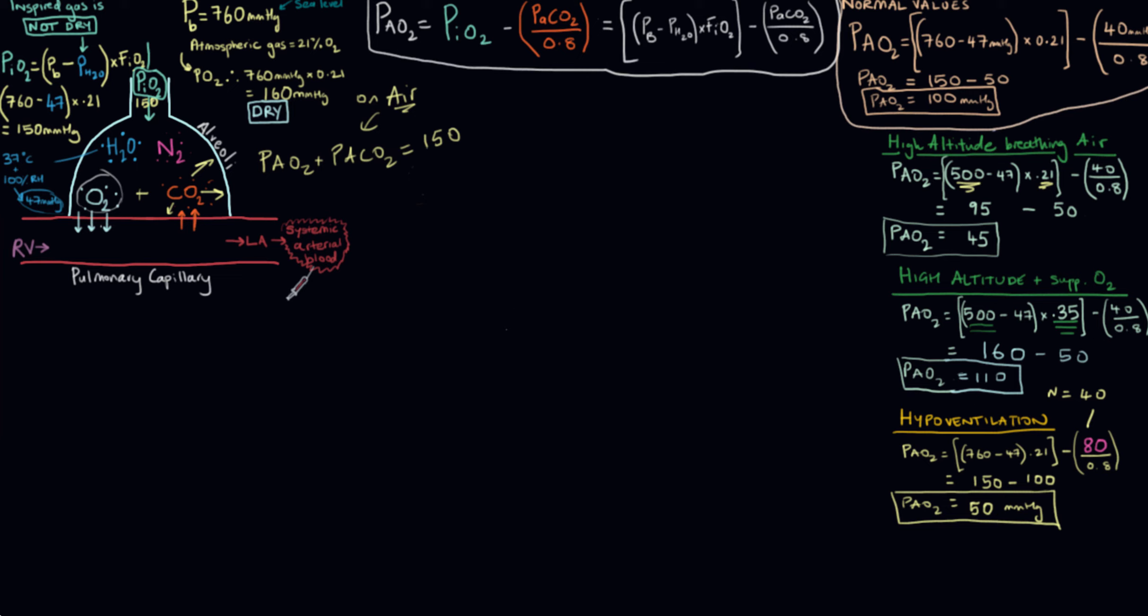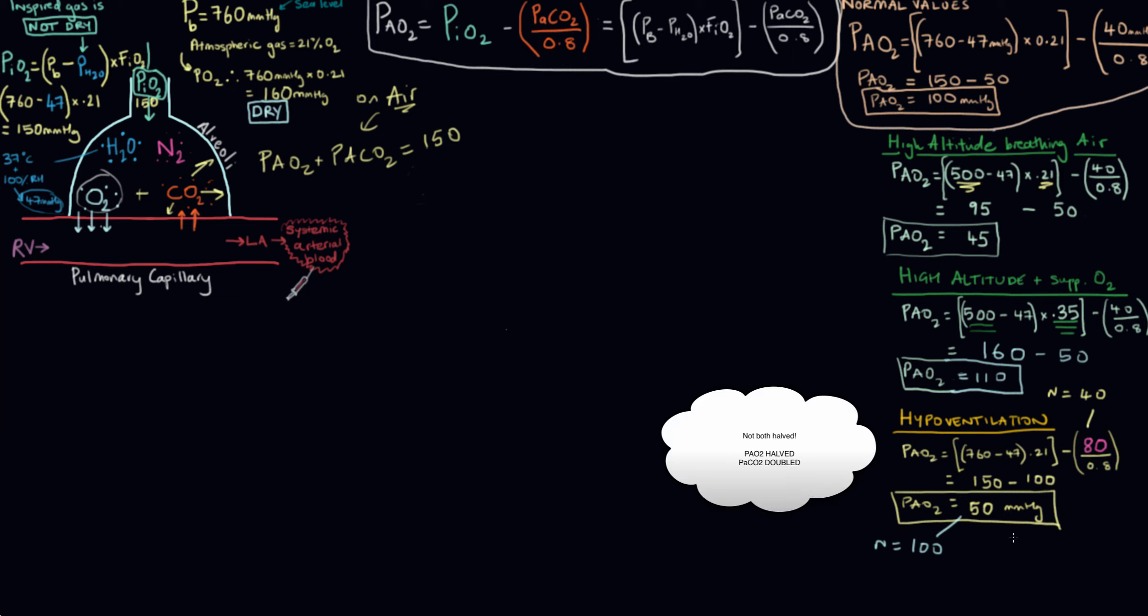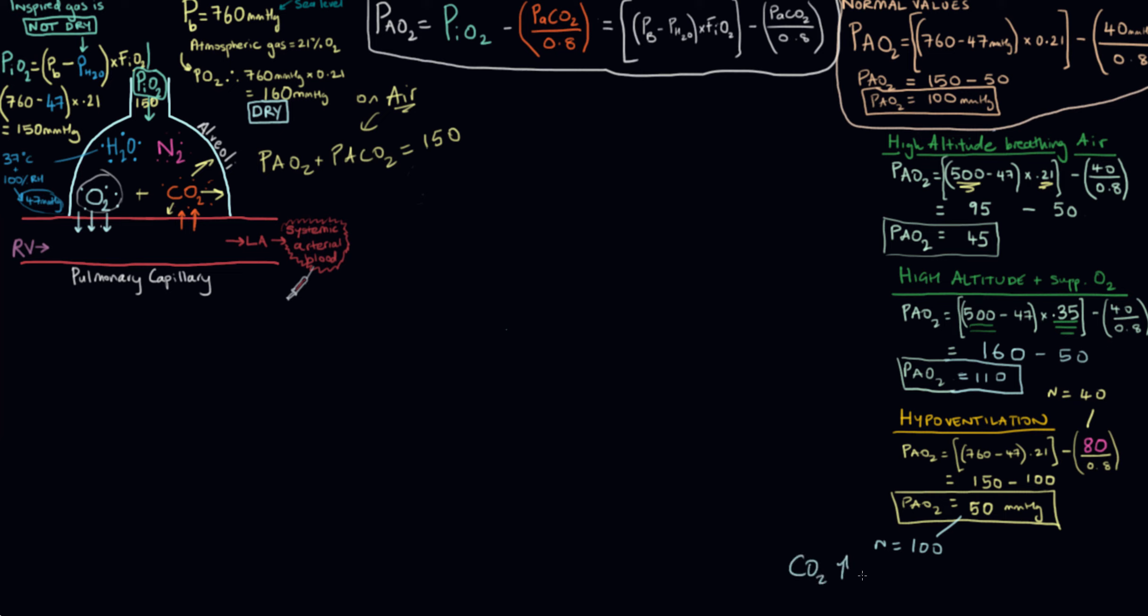And there's an interesting thing to note about the relationship between these. If we look at the normal value of 40 for our CO2 and it's doubled up to 80. And then we look at our PaO2 of 50 and the normal value is 100. Okay, so both have halved. But if we look at the difference between them, our CO2 has increased by 40. And our O2 has decreased by 50. Okay, so the decrease in oxygen is greater than the increase in CO2. And if you put those over each other, 40 over 50, you get 0.8. And it's no accident that that is your respiratory exchange ratio.